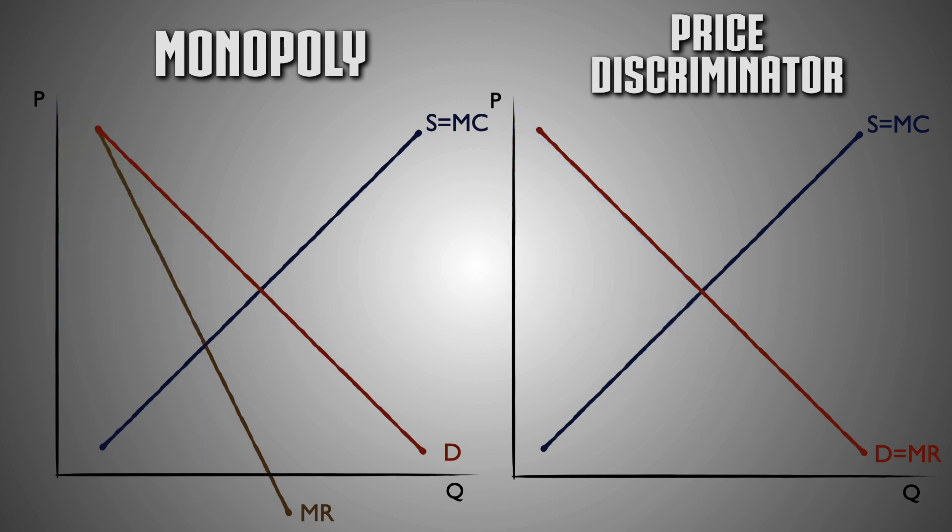Price discrimination also makes the firm allocatively efficient. Remember that for a pure monopolist, the marginal revenue of each additional unit sold is less than the price per unit at every quantity demanded. This means that marginal revenue is less than demand at every output level. Using the optimal output rule, the monopolist will set its profit-maximizing level of output where the marginal revenue of the last unit produced equals its marginal cost, causing the monopoly to under-allocate its resources, under-produce its output, and leading the monopolist to be allocatively inefficient.